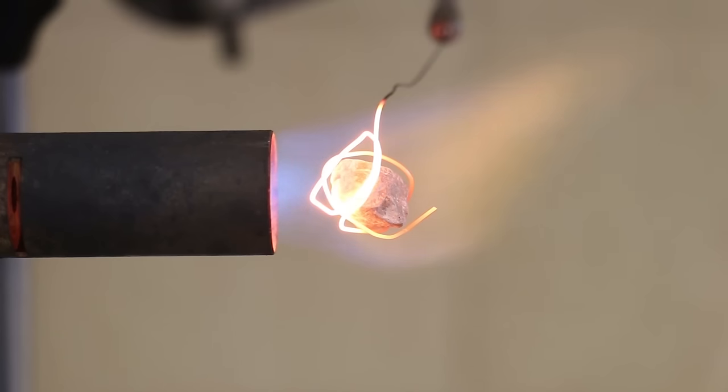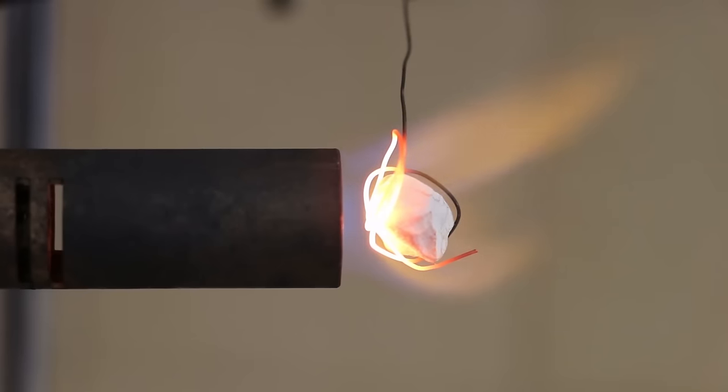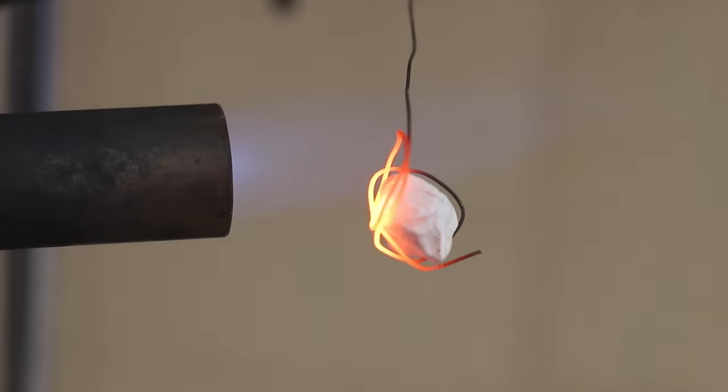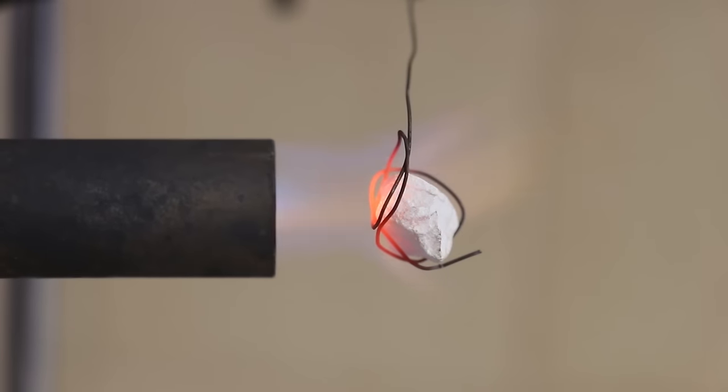As the limestone is heated, it starts to change colour, suggesting that some sort of chemical reaction is taking place. After heating this for a few minutes, we can start to see the whole piece of rock has changed colour and is starting to take on a whitish appearance.